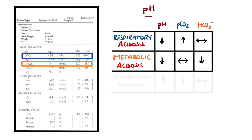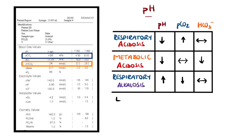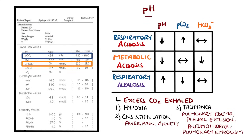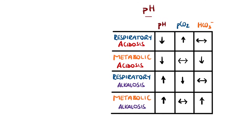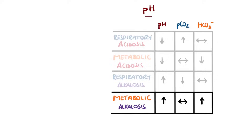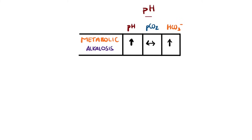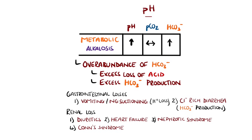Respiratory alkalosis is caused by excess carbon dioxide being exhaled due to hyperventilation, while metabolic alkalosis is caused by an overabundance of bicarbonate, either through excess loss of acid or excess presence of bicarbonate.